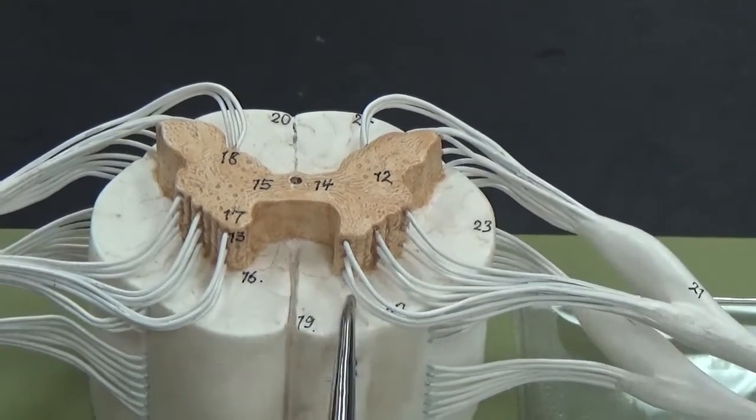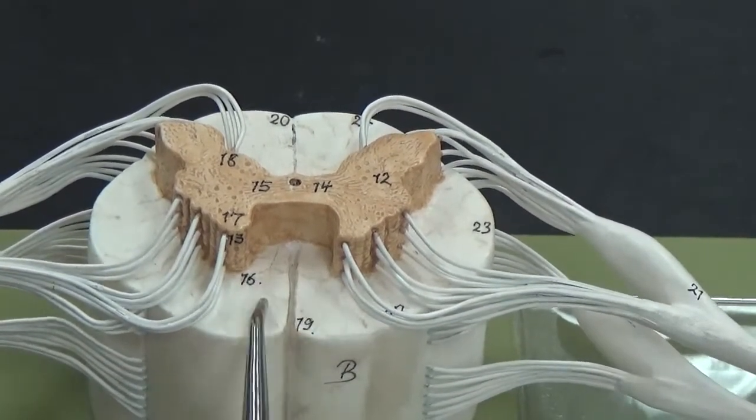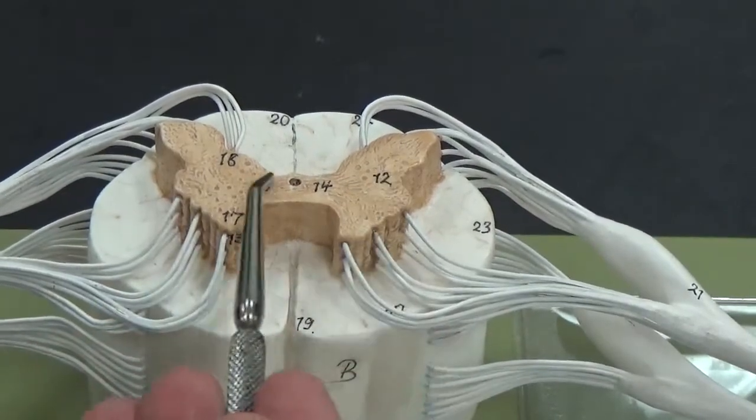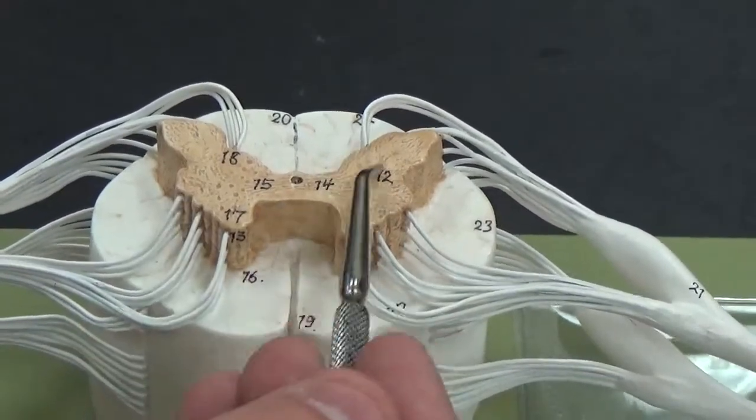You have the white matter here, so these are myelinated nerves. The gray matter here, which is the unmyelinated nerves.